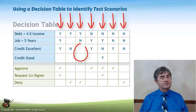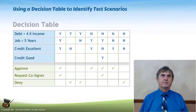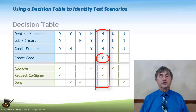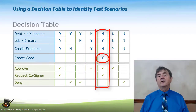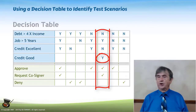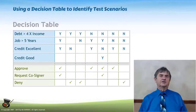The conditions that are blank in the table indicate they are irrelevant for that particular set of conditions. As an example, there's only one column in which the 'credit good' condition is relevant — that is if your debt is not greater than four times your gross income, you have been on the job for over five years, and your credit is not excellent but it is good, which would be good enough. That's an example of a decision table.